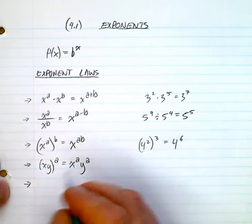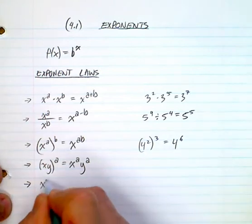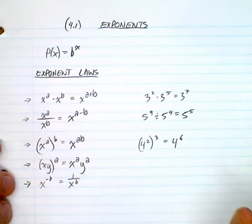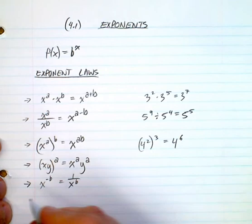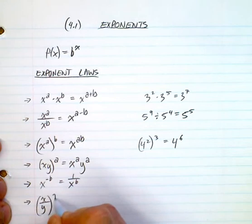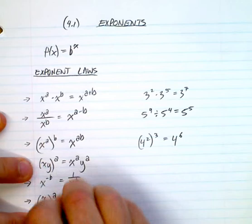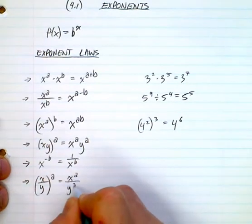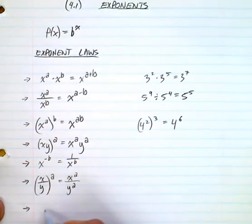Negative exponents. If I have x to the power of negative b, that's one over x to the power of b. What else do we have here? If I have x over y to the power of a, that's going to be x to the a—the top to that exponent and the bottom to that exponent. Anything to the power of zero is equal to one.